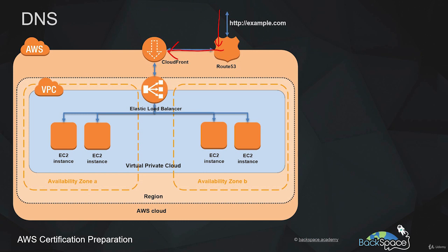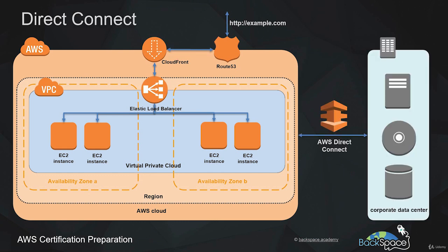Let's say we work for a large enterprise that has its own corporate data center located where employees work, so they aren't slowed down by the network. At the same time, we have resources on the AWS cloud that those employees also need to access. We need a high-speed connection between our corporate data center and the AWS cloud — that is where AWS Direct Connect comes in. It can provide a very high-speed fiber optic private network between our corporate data center and the AWS cloud.